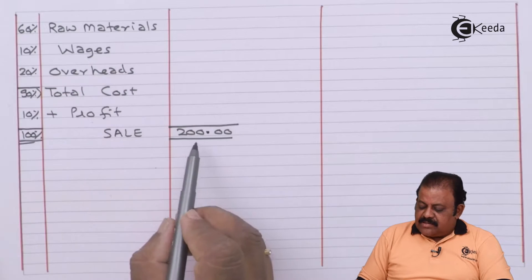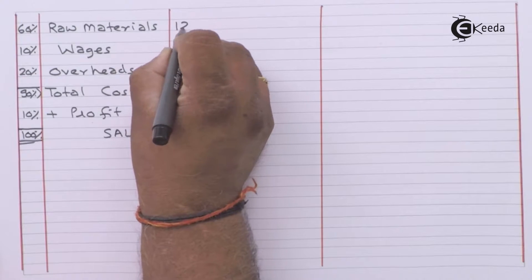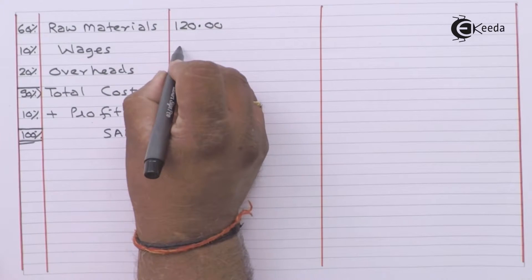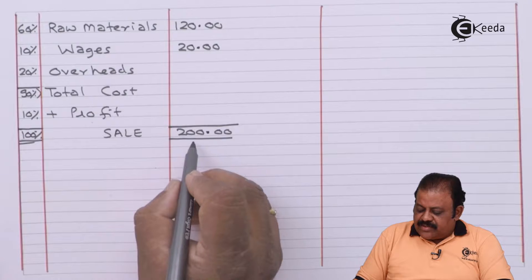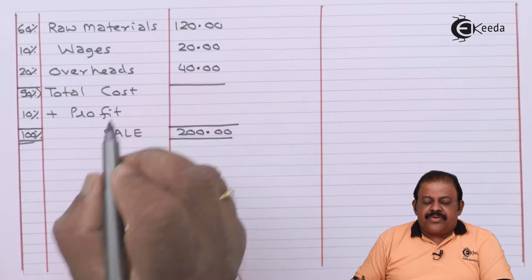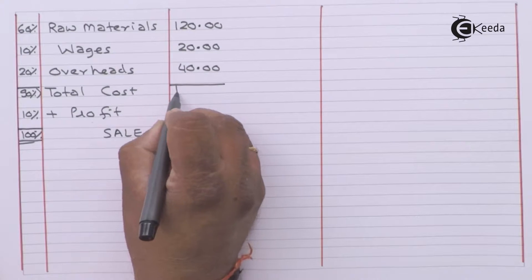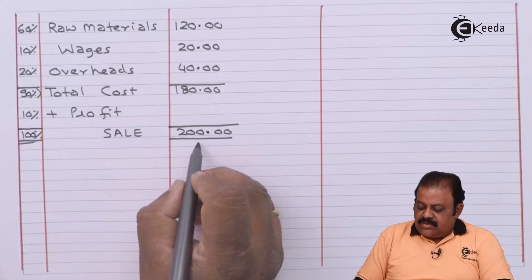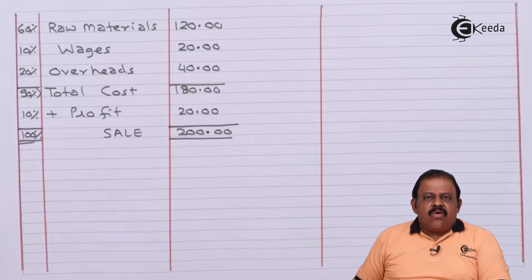Selling price is given as rupees 200, which we take as 100%. Raw materials are 60% of selling price 200, so it will be rupees 120. Wages are 10% of selling price 200, so it will be rupees 20. Overheads are 20% of selling price 200, so it is rupees 40. Total cost is 90% of sale price 200, which is rupees 180. Profit is 10% of selling price 200, which is rupees 20.